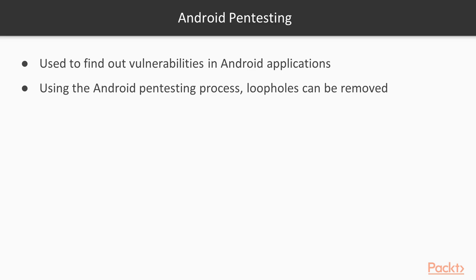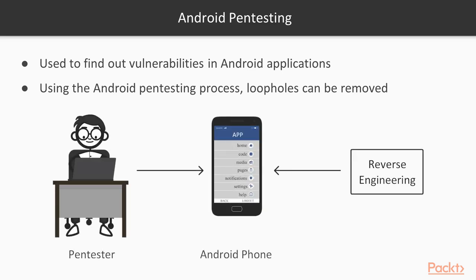Android pen testing is used to find out vulnerabilities in Android applications. For example, if there is an app available in your Android phone, our work is to find out whether this app is actually secure or not. We need to perform different kinds of actions on this app.